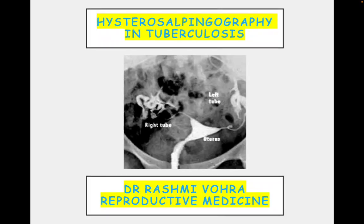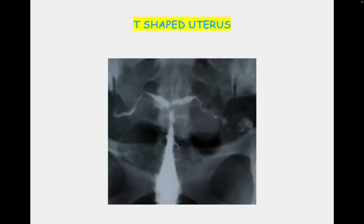The most common site involved in female genital tuberculosis is the fallopian tube, affected in 90 to 100% of cases. The endometrium is involved in 50 to 60% of cases.